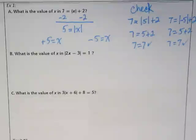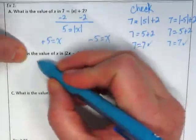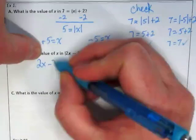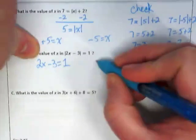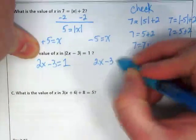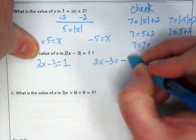Let's try B. What is the value of x in absolute value of 2x minus 3 is equal to 1? Is the absolute value alone on one side of the equation? So we need to just rewrite it now. We're going to do 2x minus 3 is equal to 1, and 2x minus 3 is equal to negative 1.